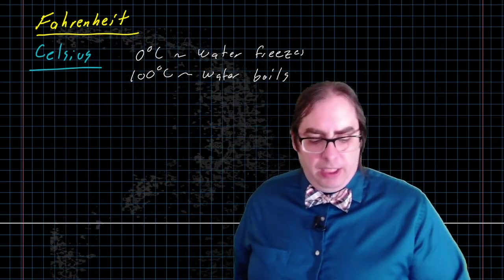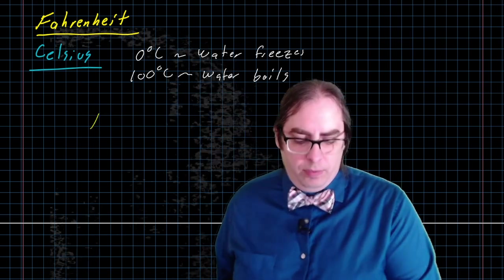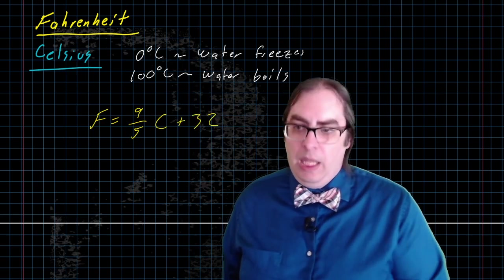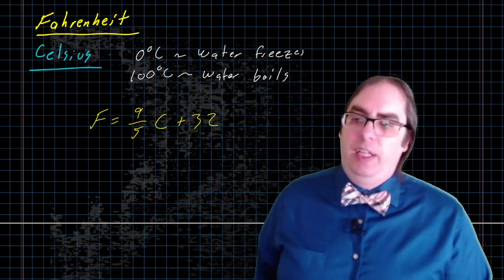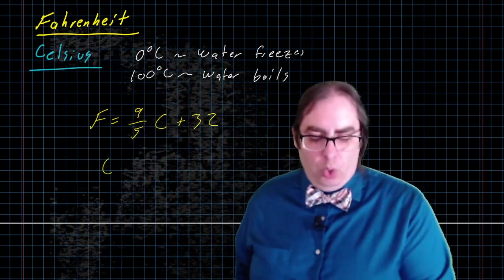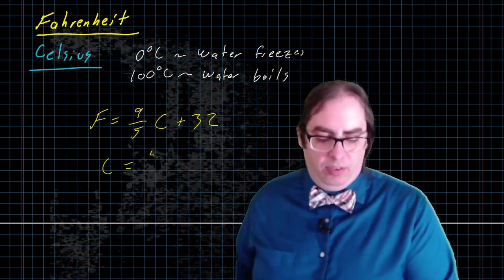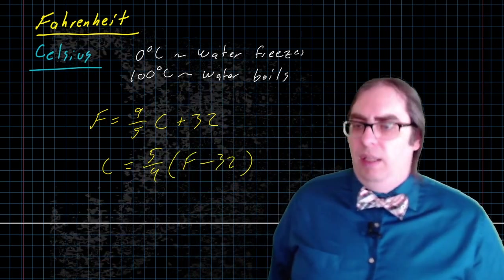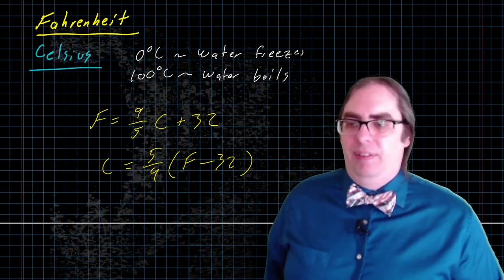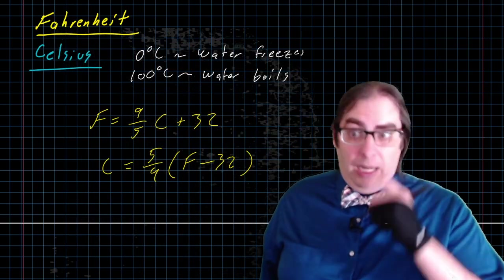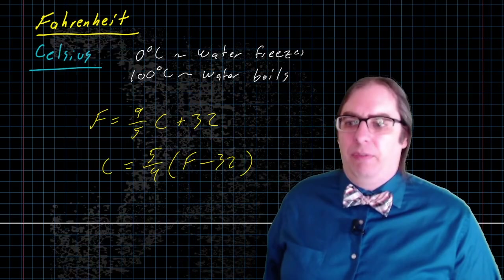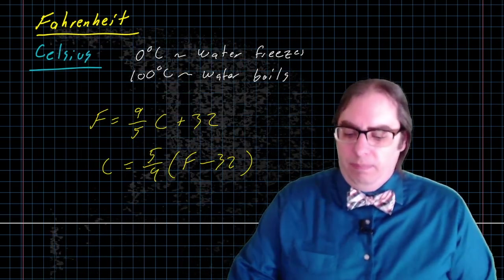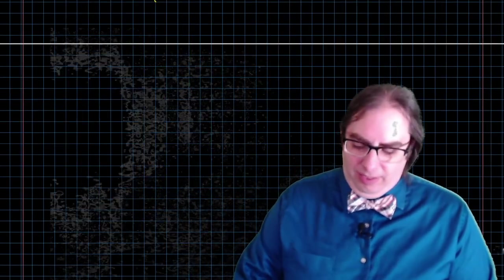You have probably come across, at some point, the conversion formula Fahrenheit is nine-fifths Celsius plus 32, or rewriting that Celsius is five-ninths Fahrenheit minus 32. You can use these formulas to convert between Fahrenheit and Celsius temperatures. I'm not going to bother with that for the most part because, well, quite honestly, that's kind of boring. I'd rather get to some interesting things instead.